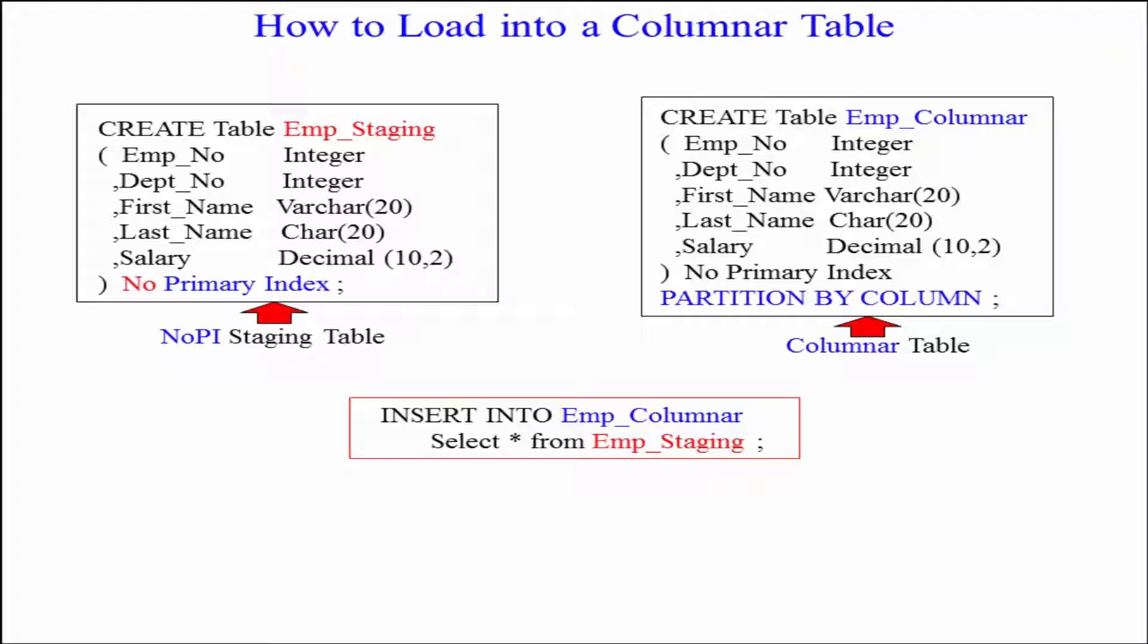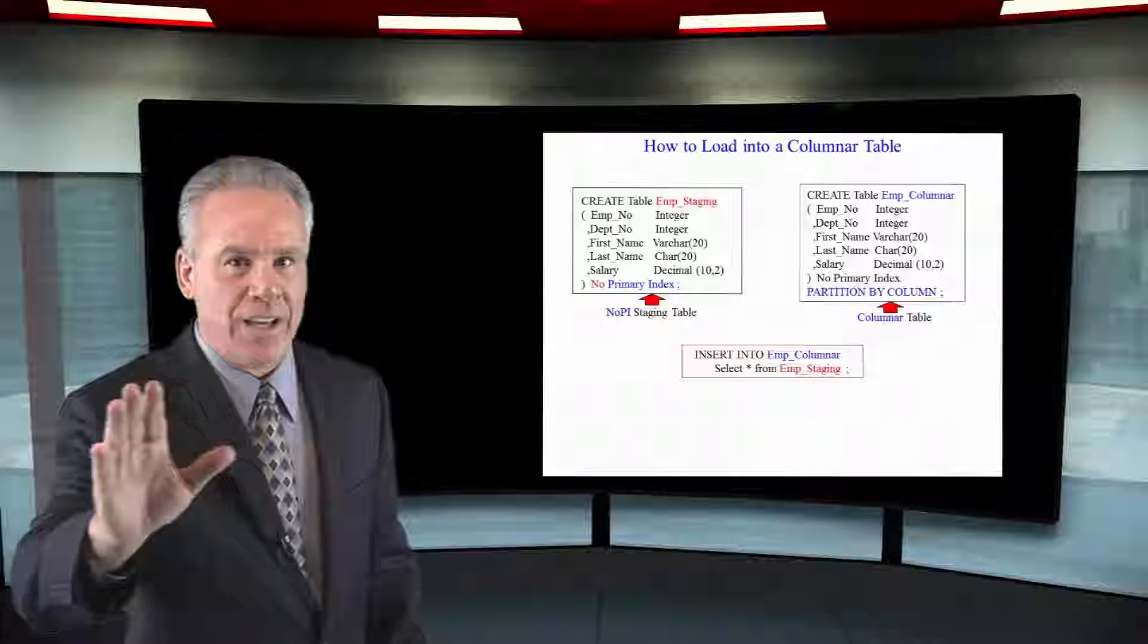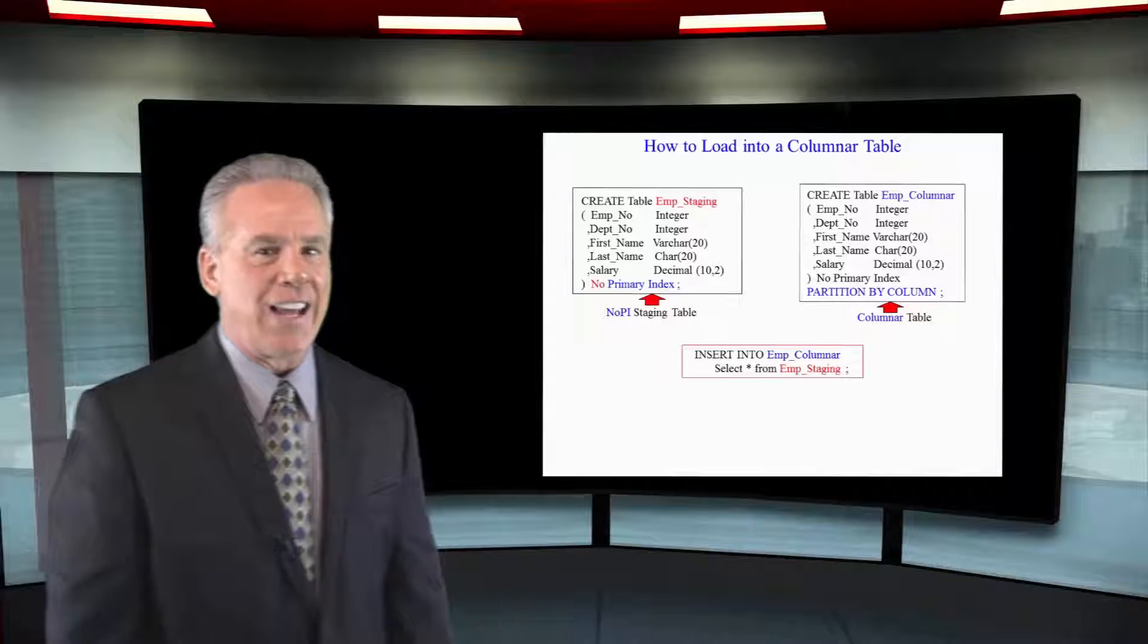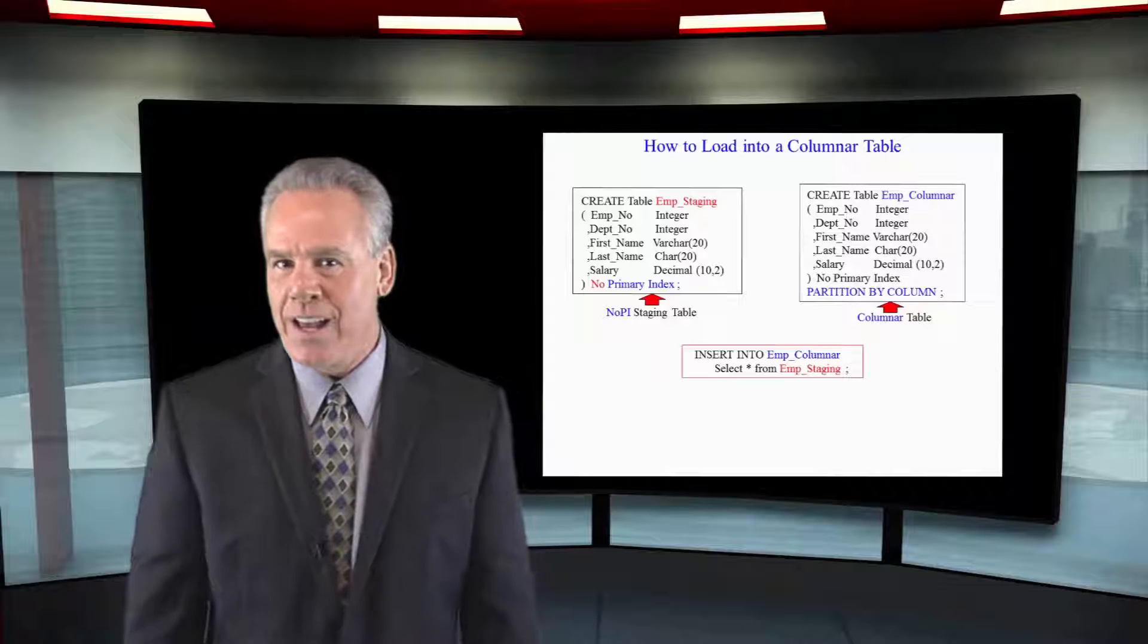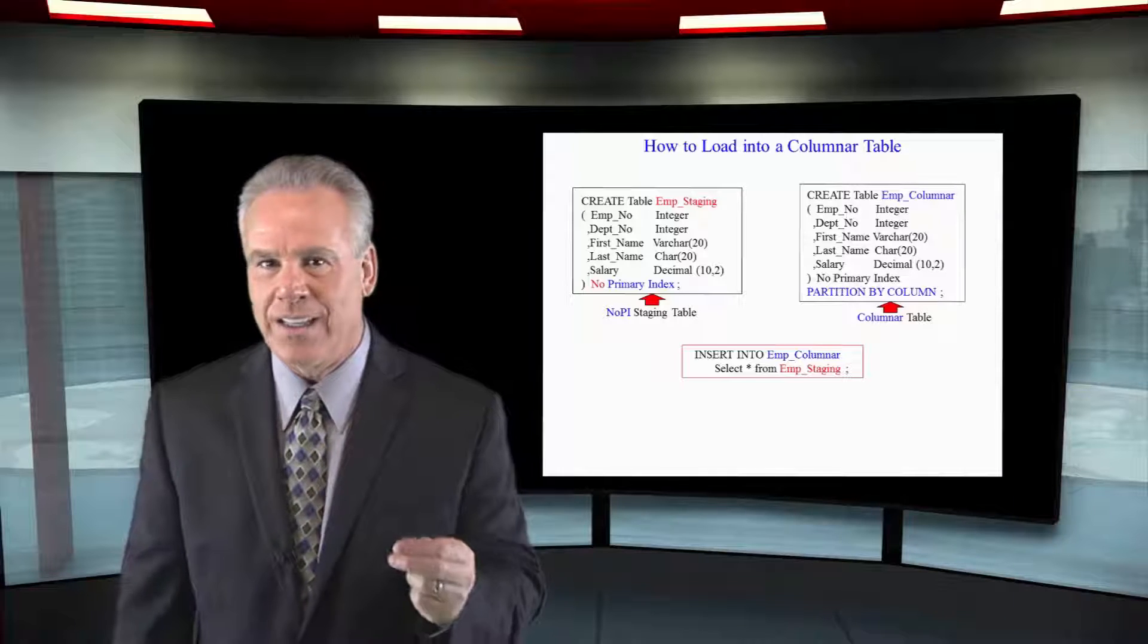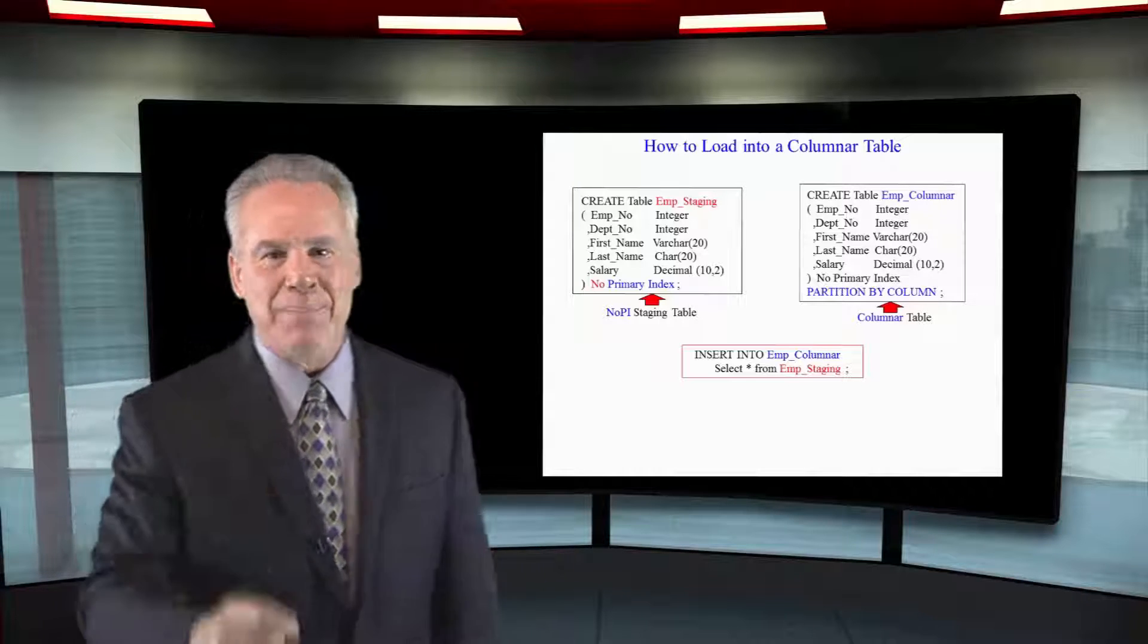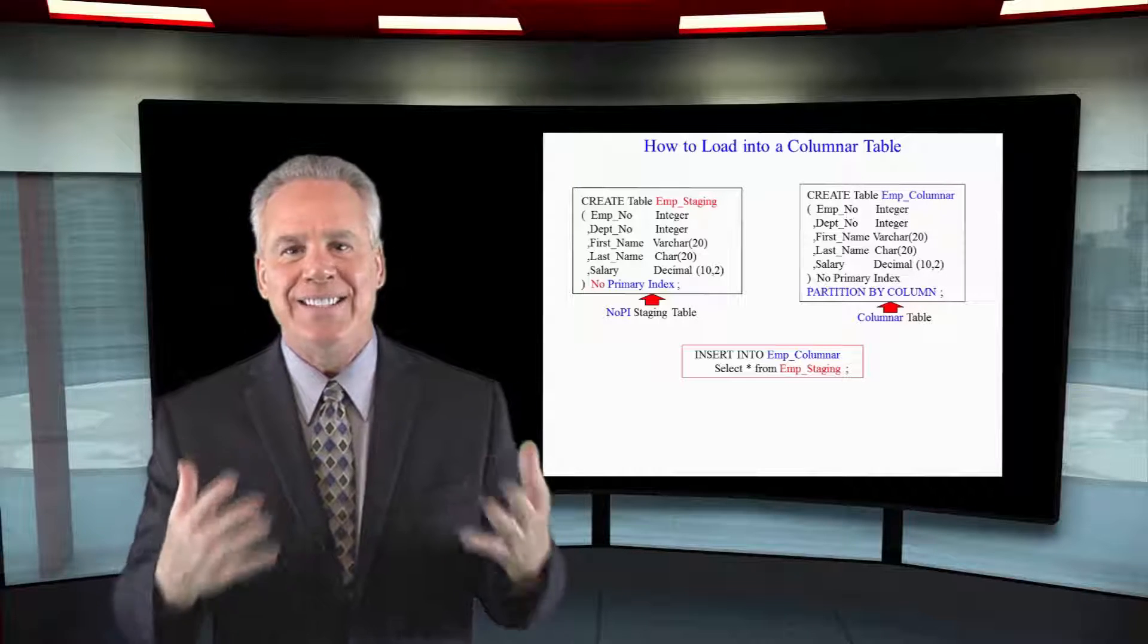Create table emp staging. We put all the columns in there and we say no primary index. We do the load utility. We load to emp staging. Now we create our table emp columnar. It's got all our column stuff. It says no primary index. Partition by column. And this is a columnar table. Now it's time to do the insert select. Insert into emp columnar. Select everything from emp staging and the data is loaded.